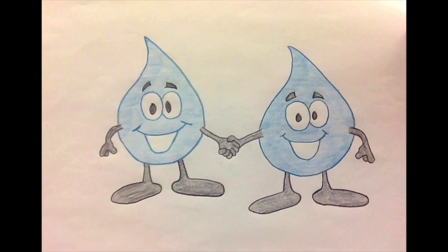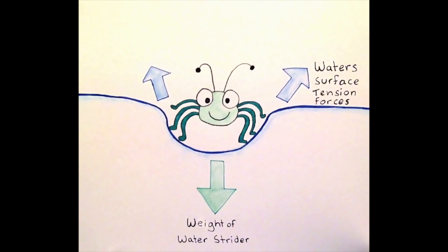This results in the creation of high surface tension. Surface tension is one of the key characteristics of water. It gives water the ability to support an external force. This force is what allows a water strider to walk across the surface of a pond.